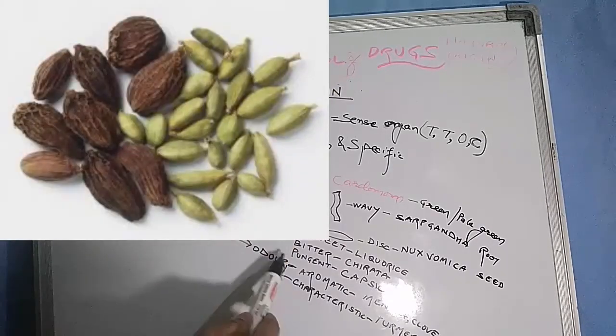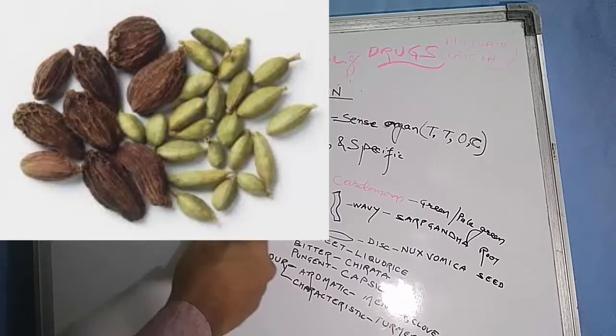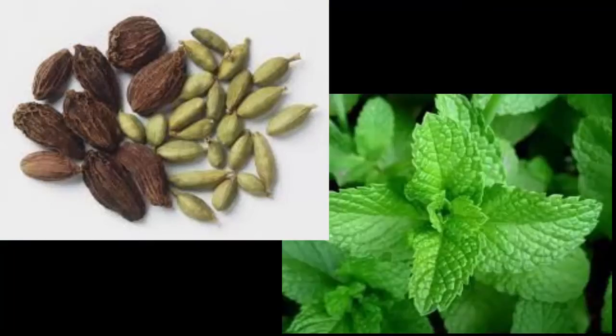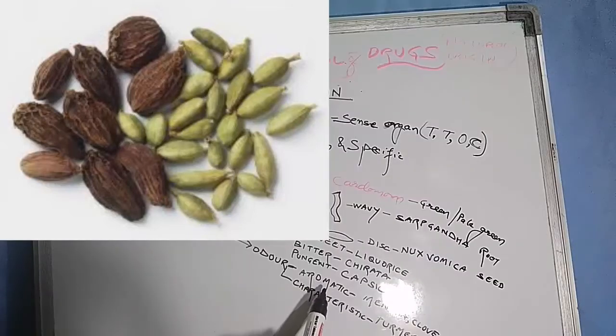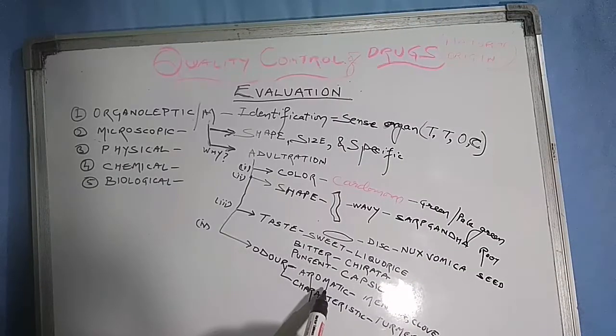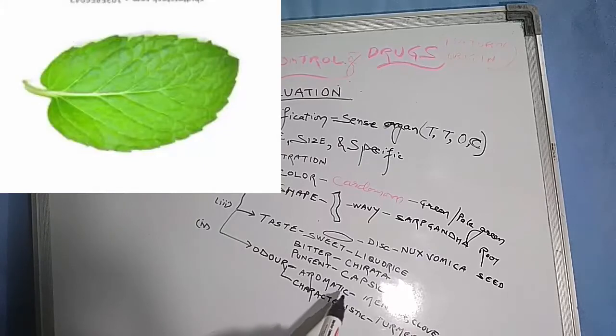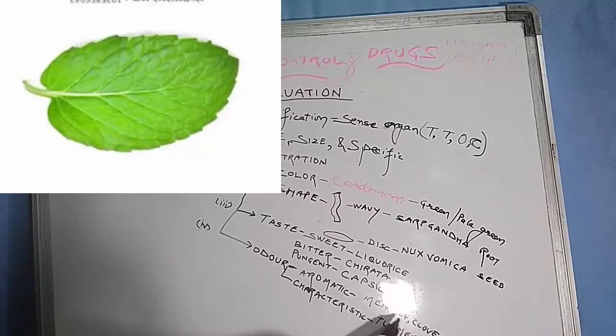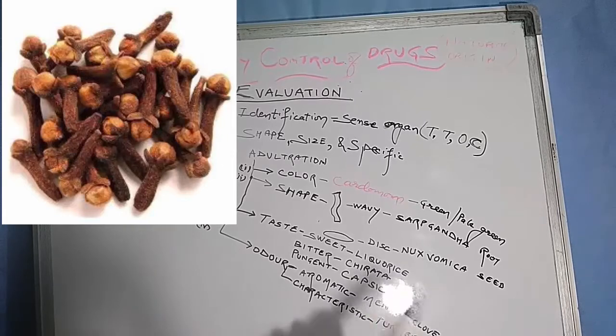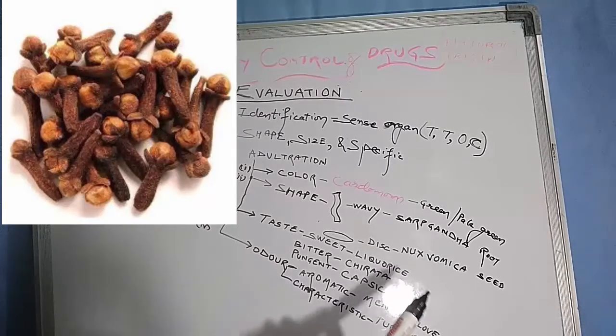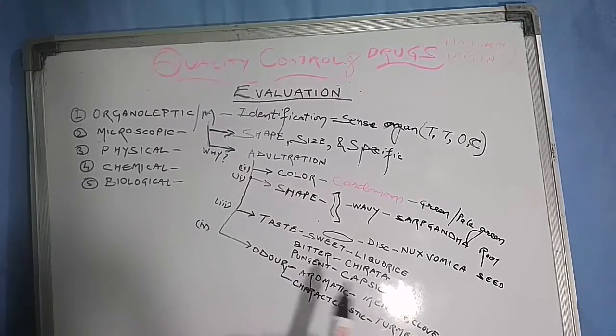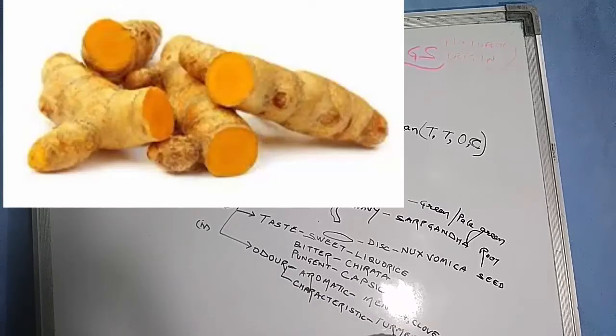Odor or fragrance can also detect adulteration. Aromatic odor examples include mentha and clove. Turmeric has a characteristic smell. With the help of turmeric's characteristic smell, we can identify whether it is turmeric or some other drug.